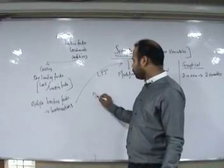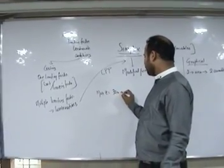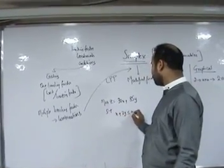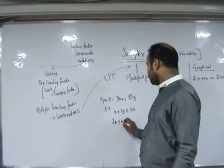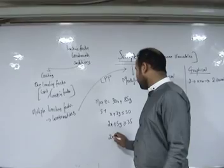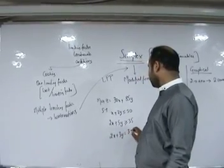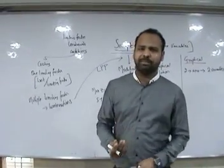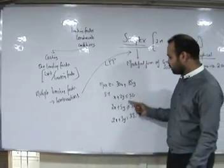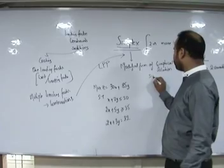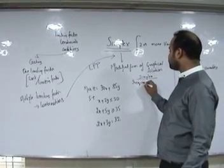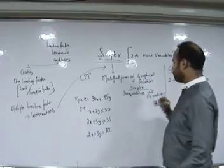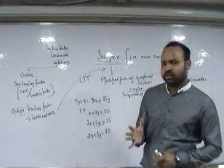Say we have a linear programming problem: maximize z = 30x + 85y, subject to conditions like x + 2y ≤ 30, 2x + 5y ≥ 35, and 2x + 3y = 32. For the simplex method, we have to convert inequalities into equalities — that is, into equations. To convert them into equations, we have to introduce certain variables.